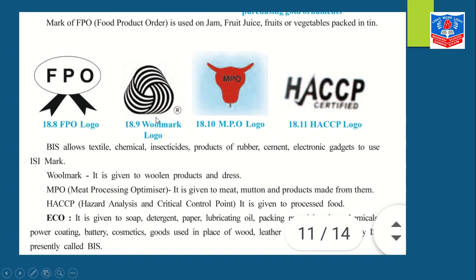Woolen products carry the Woolmark logo, which gives assurance that the wool and wool product are of good quality. The MPO mark is on non-veg items — it is given to meat, mutton, and products made from them, certifying that the non-vegetarian product is of good quality.